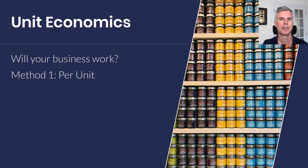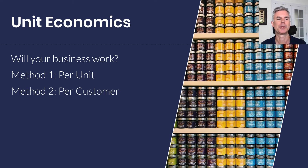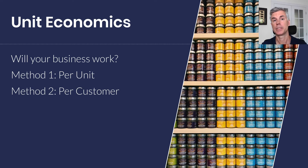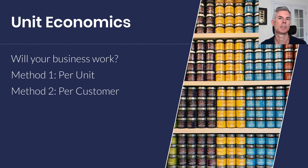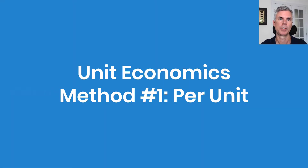You can look at it per unit — here's a nice picture of jars. How much do we make per jar? Method two is per customer. Per unit works very well with transactional sales, sales of physical goods. Per customer works better when there is a lifetime relationship with the customer.